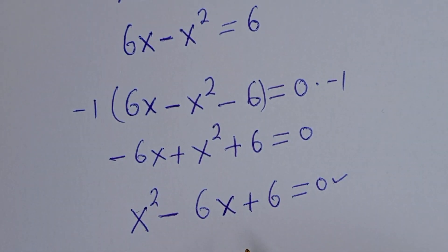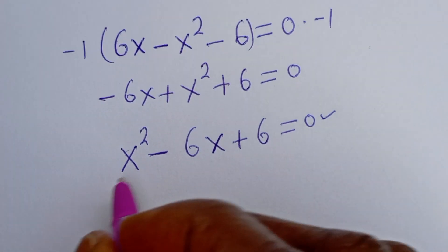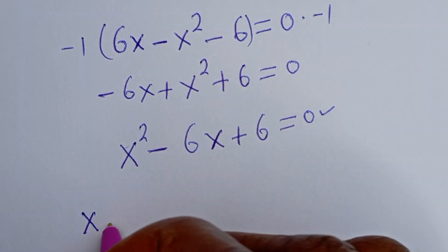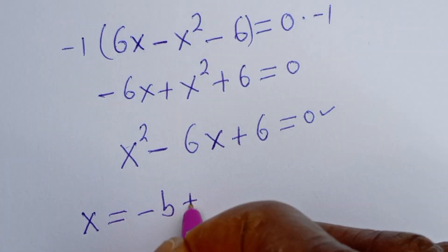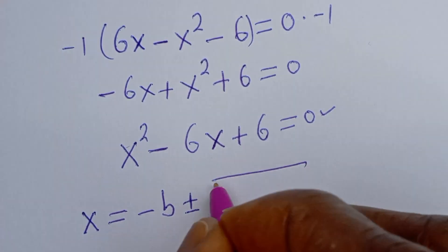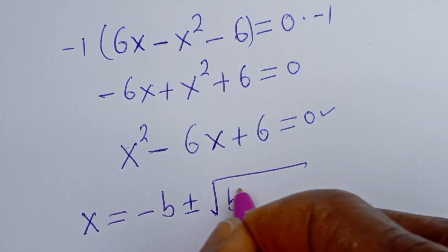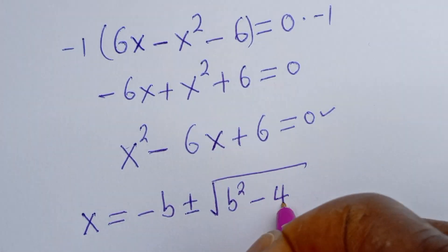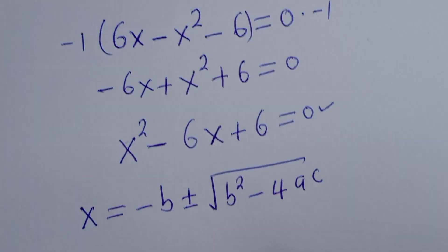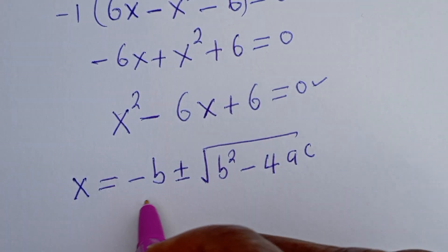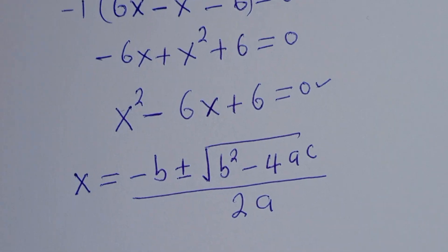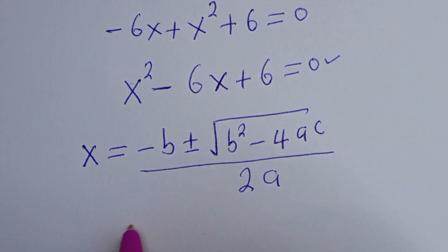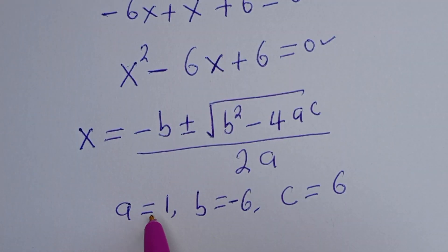This quadratic equation can be solved with the quadratic general formula: s equals minus b plus or minus the square root of b squared minus 4ac, all over 2a. From this equation: a equals 1, b equals minus 6, c equals 6.